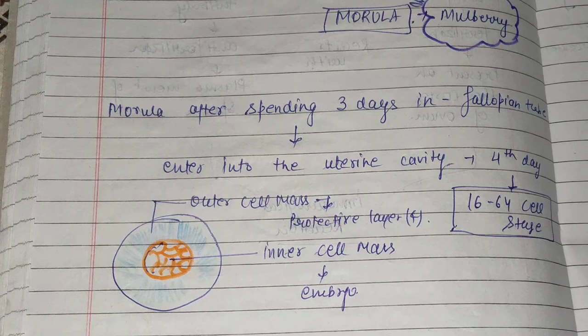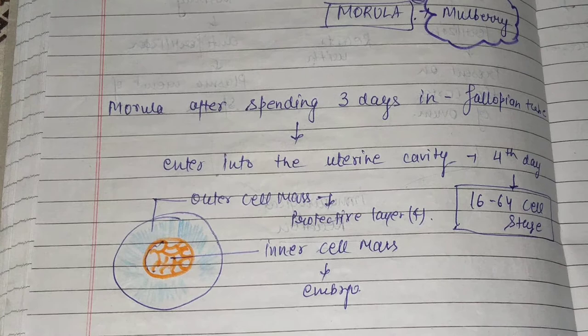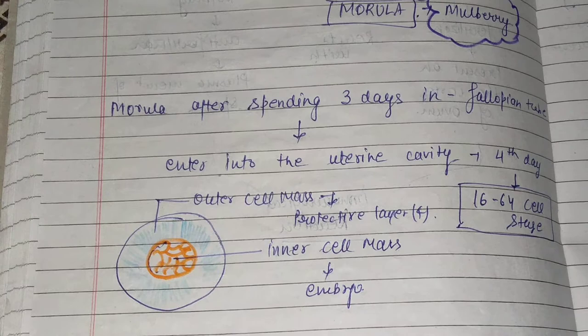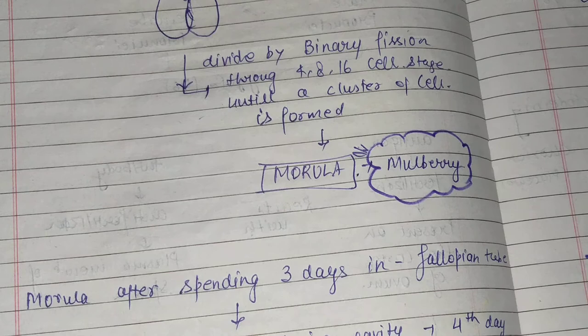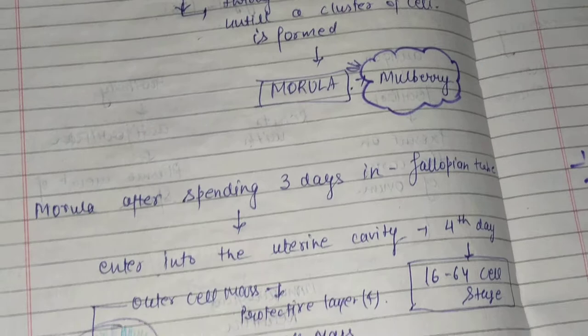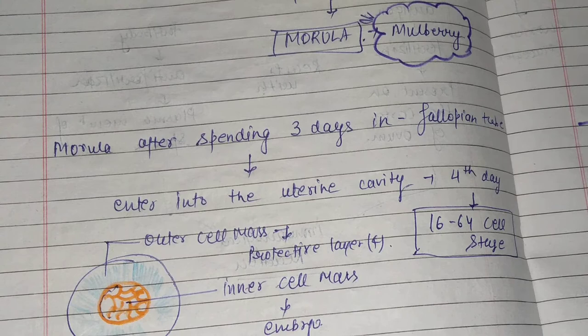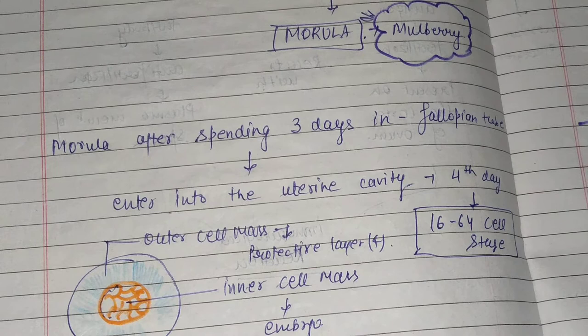To revise: when male and female pronuclei form the zygote, mitotic division begins. After 30 hours of fertilization there are 2 cell stages with 2 blastomeres, which undergo binary fission to the 4, 8, and 16-cell stage, forming the Morola which resembles a mulberry. After 3 days it enters the uterine cavity at the 4th day, reaching the 16 to 64-cell stage.